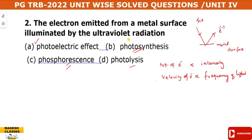This is the threshold frequency — the minimum frequency required for the photoelectric effect to occur. Below the threshold frequency, no electrons are emitted regardless of intensity.